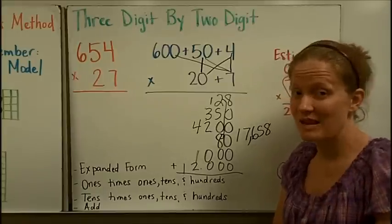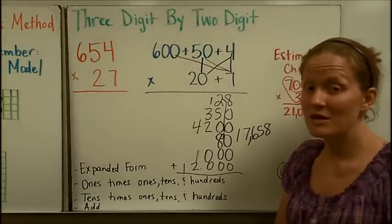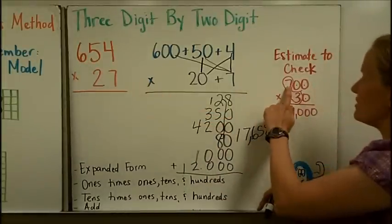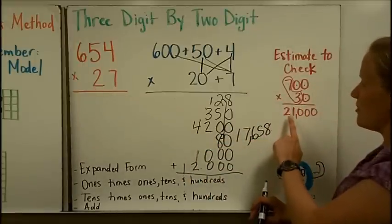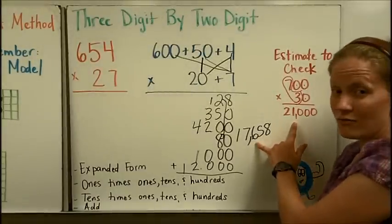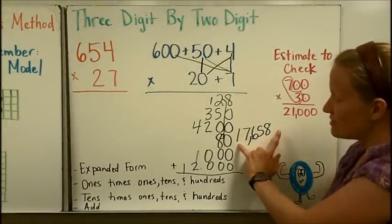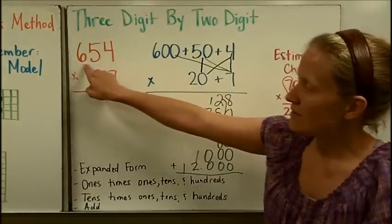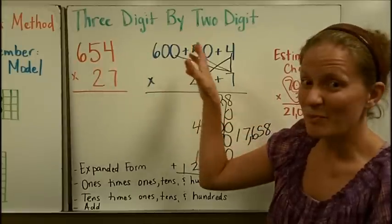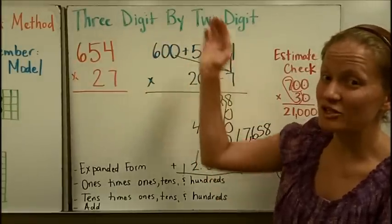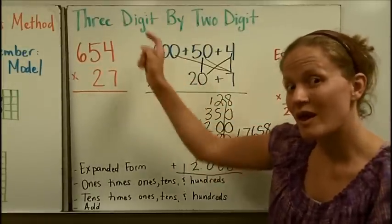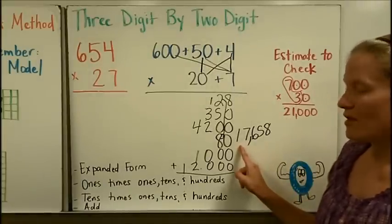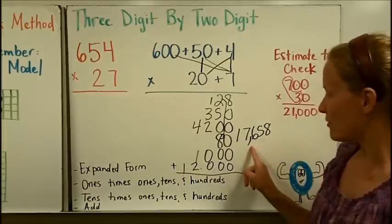Because there were so many steps, there's a chance I made a mistake, so I'm going to use estimation and rounding to check. I rounded six hundred fifty-four to seven hundred and twenty-seven to thirty, getting an estimated product of twenty-one thousand. They both reach the ten-thousands place, suggesting they're in the right range. I rounded up on both numbers — six hundred fifty to seven hundred is a big jump, and twenty-seven up to thirty — so my estimated product being higher than the actual answer makes sense. This tells me my answer of seventeen thousand six hundred fifty-eight is likely correct.